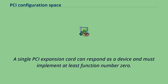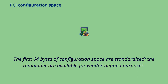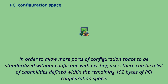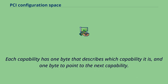A single PCI expansion card can respond as a device and must implement at least function number 0. The first 64 bytes of configuration space are standardized; the remainder are available for vendor-defined purposes. To allow more parts of configuration space to be standardized without conflicting with existing uses, there can be a list of capabilities defined within the remaining 192 bytes of PCI configuration space. Each capability has one byte describing which capability it is, and one byte to point to the next capability.